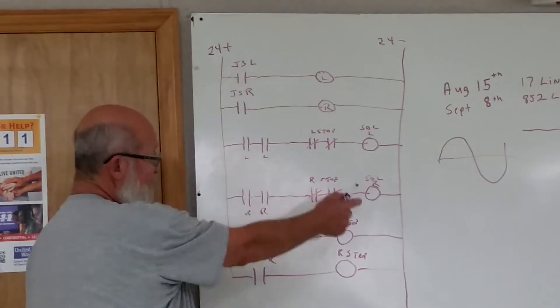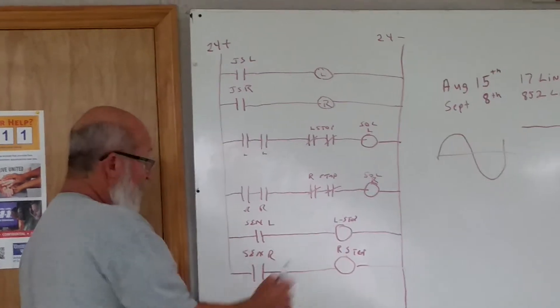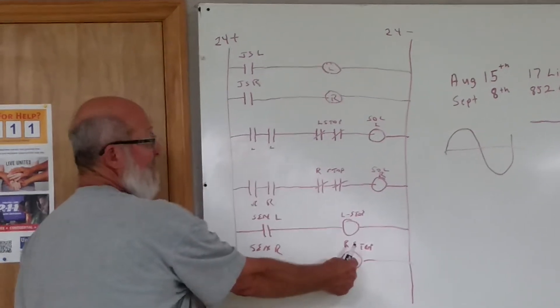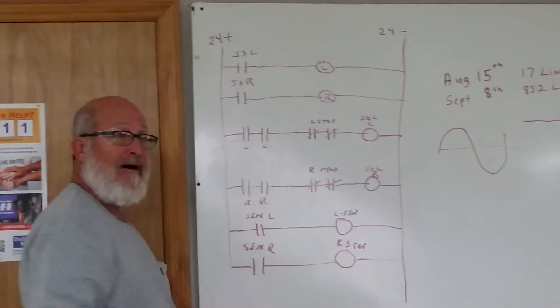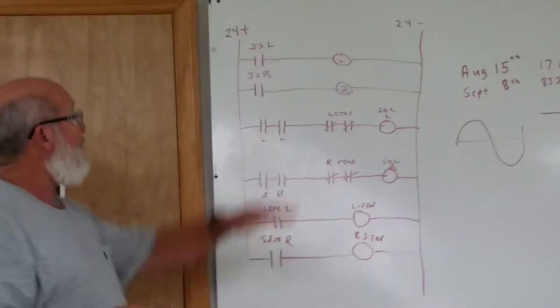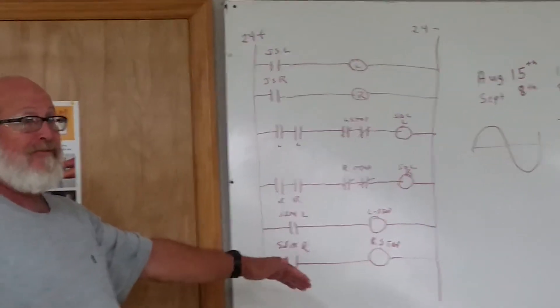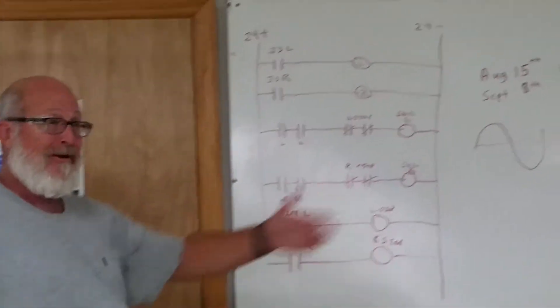As soon as it hits that sensor to the right, it's going to energize the right stop relay. It's going to open these contacts. It's going to stop. So that's how it works for the left and the right.